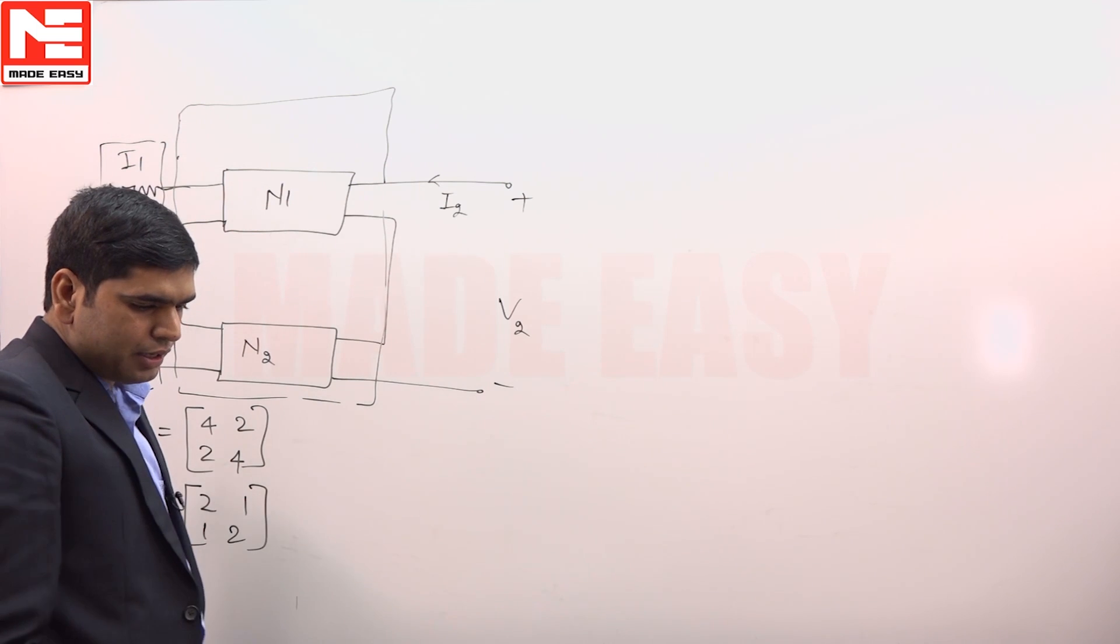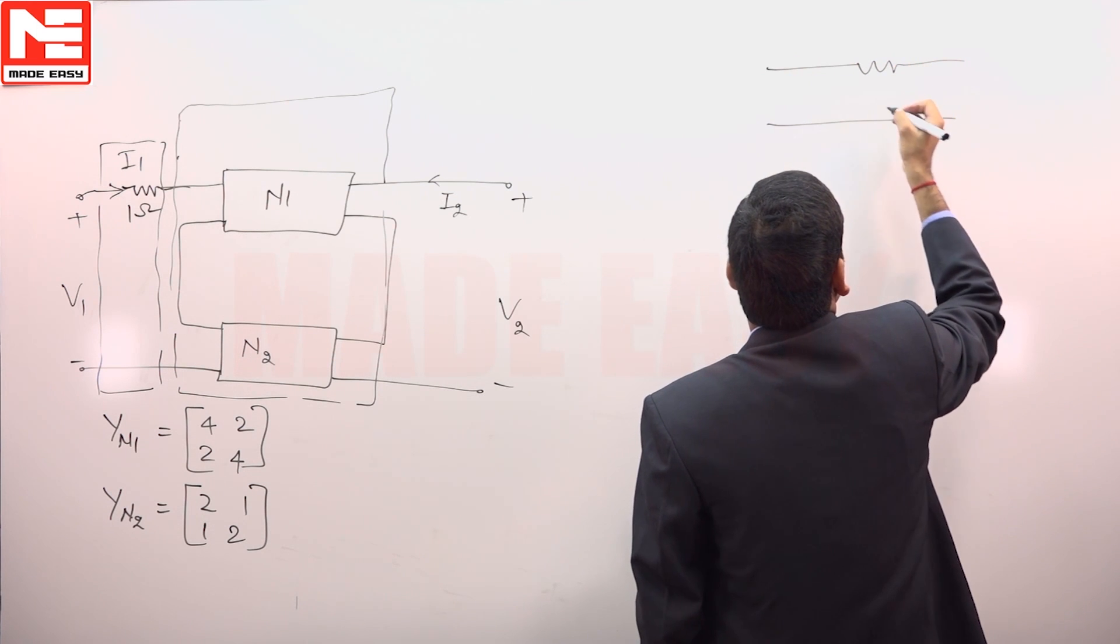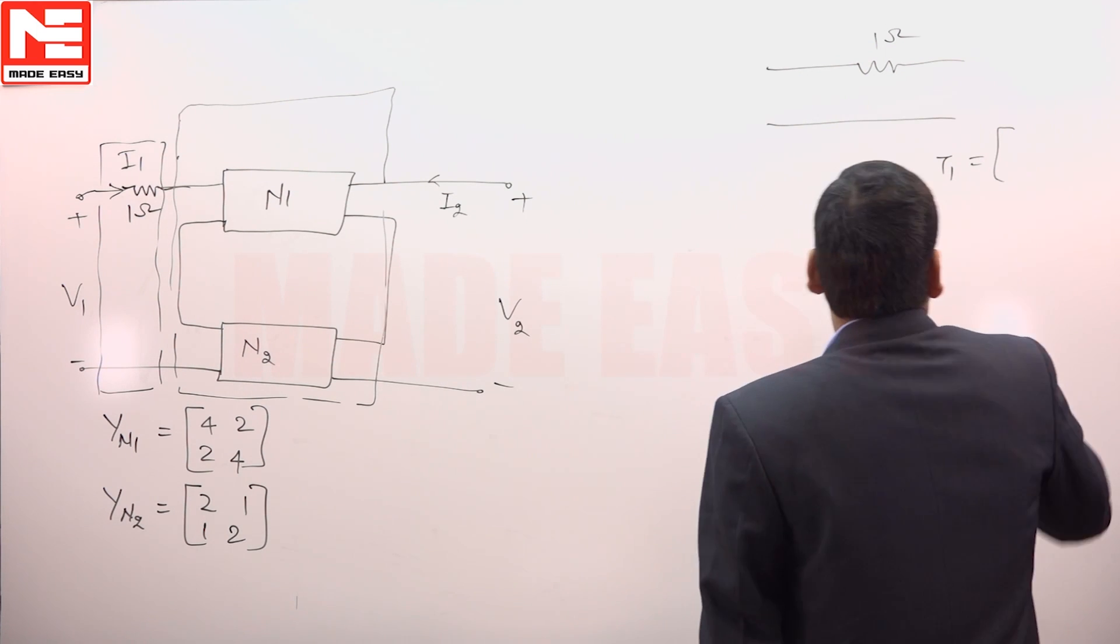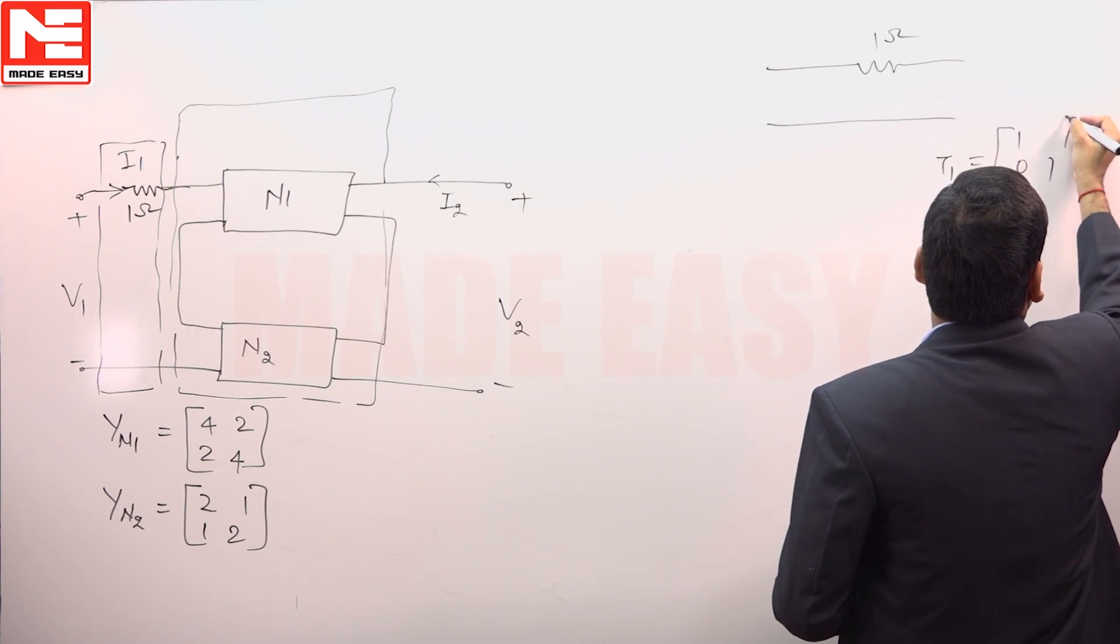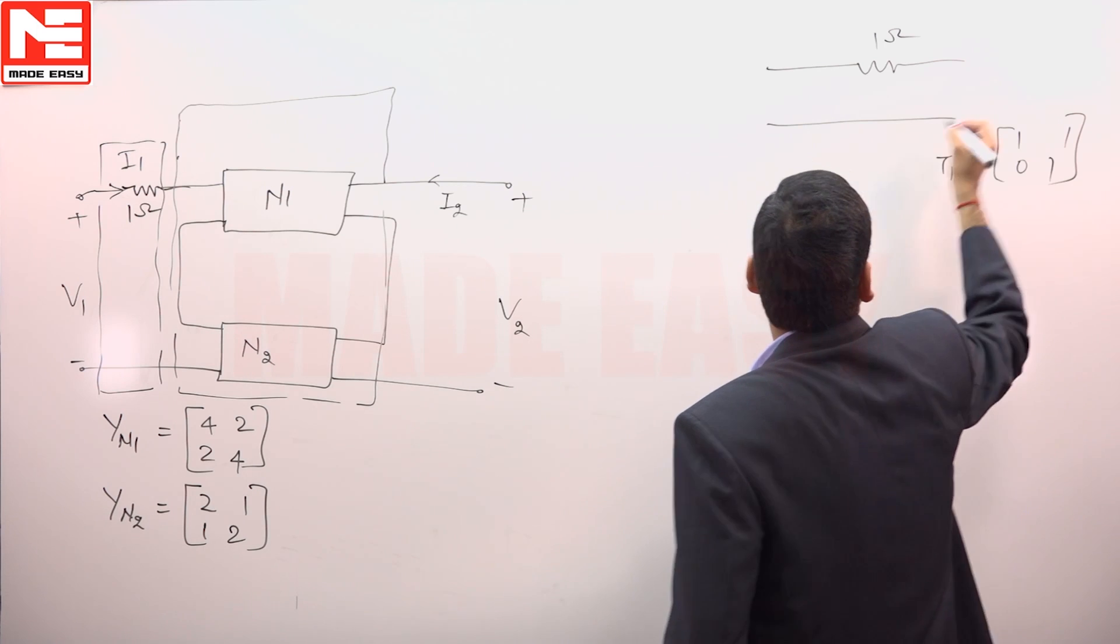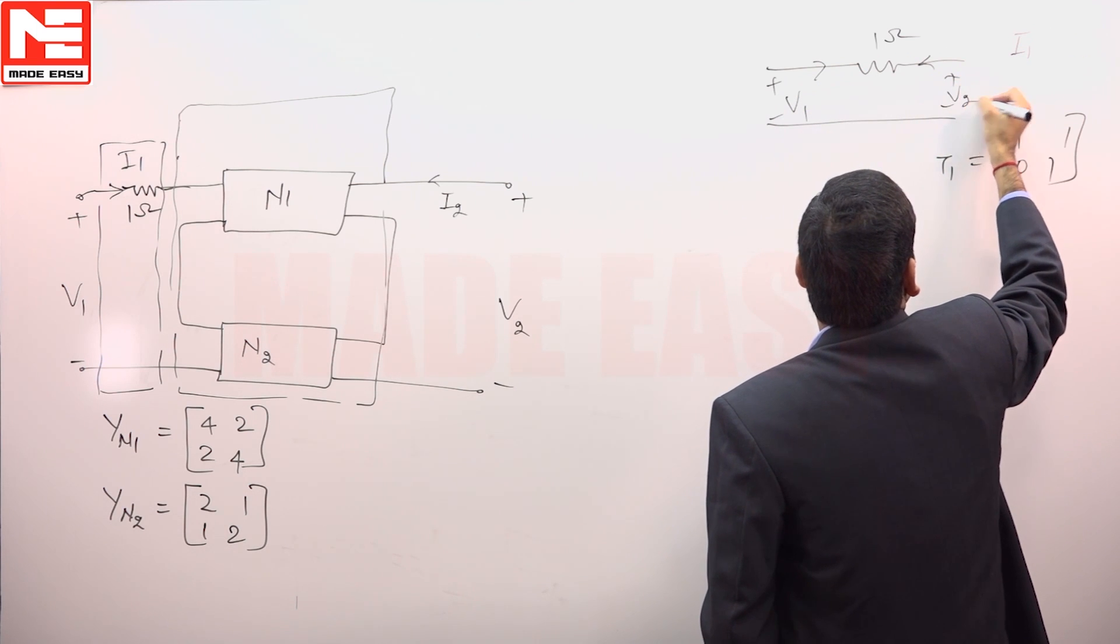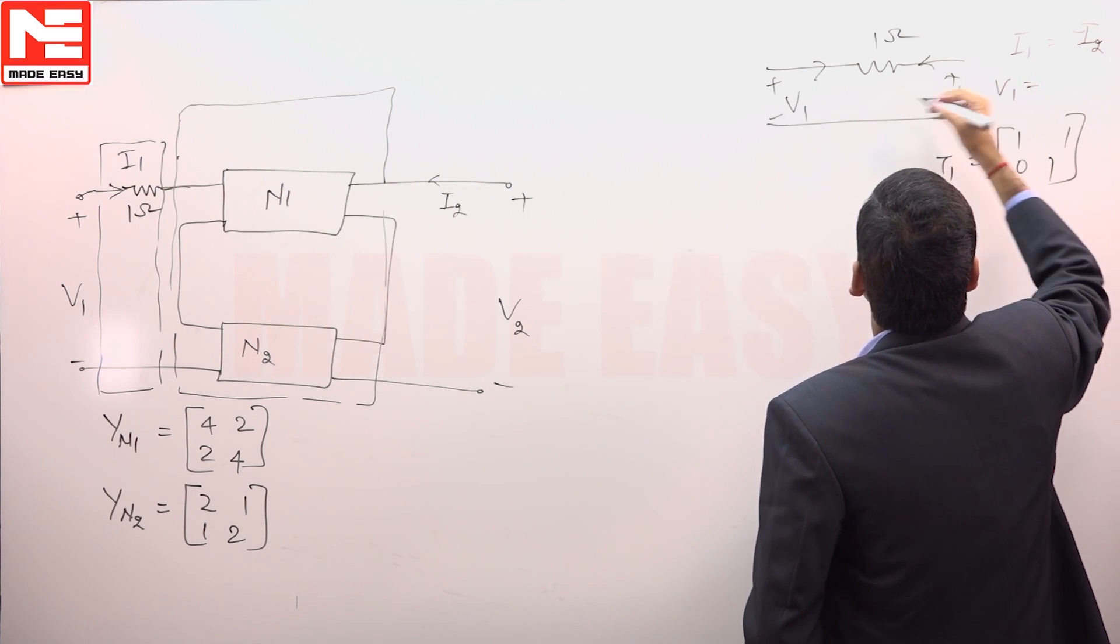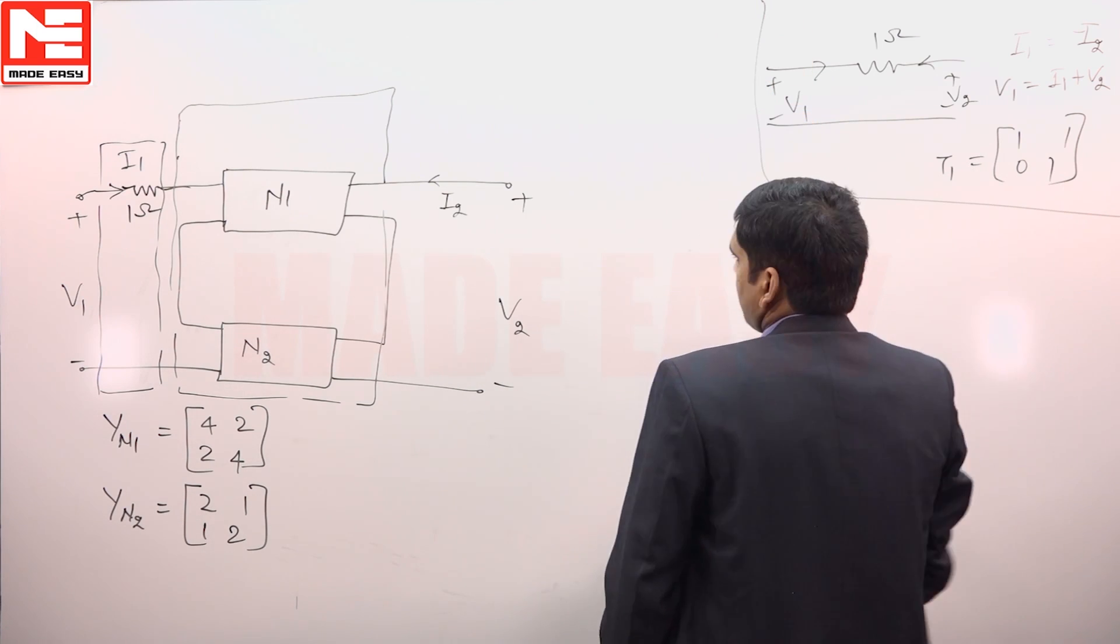For this one, we will calculate separately the T parameter and for this separate T parameter 1 ohm, suppose T1, it is equal to the standard 1 1 1 and 0 1, simply by writing the equations I1 plus minus V1 plus minus V2, I1 is equal to minus I2 and V1 is equal to this I1 plus V2. So, solving these two equations T1 is like this.